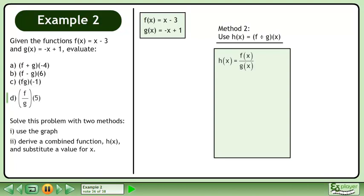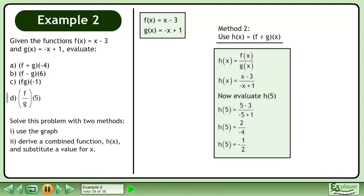Now solve the problem algebraically by finding a function h that is the quotient of functions f and g. Replace f of x with x minus 3 and replace g of x with negative x plus 1. Now evaluate h at 5 to get negative one over two. This matches the result we obtained from the graph earlier.